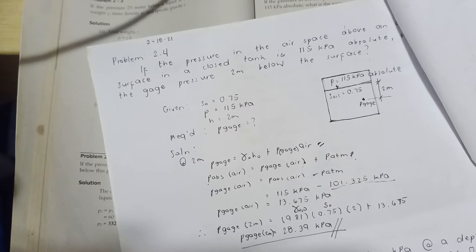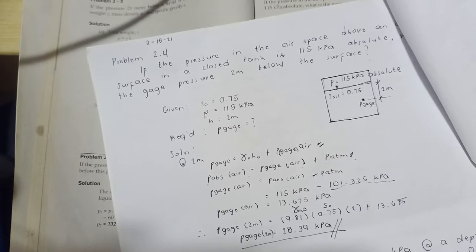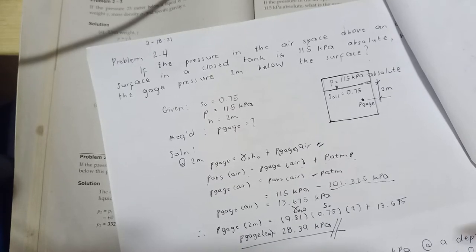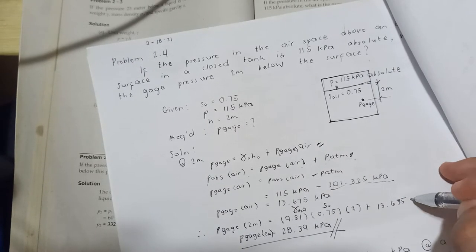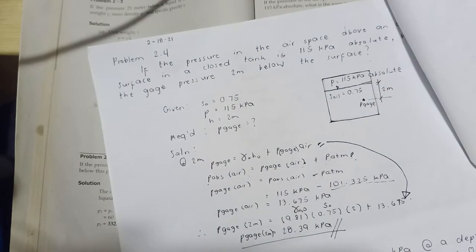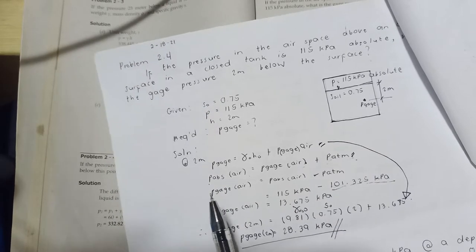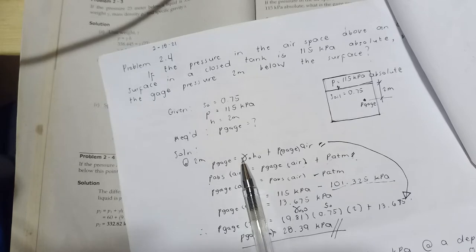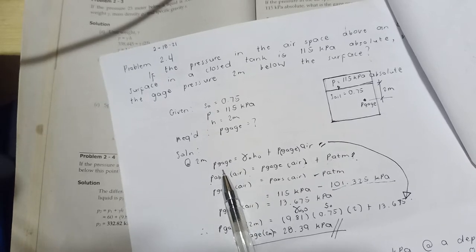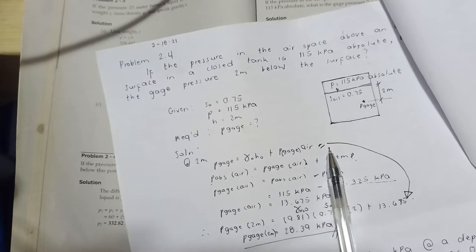The gauge pressure of the air is 13.675 kilopascal. Since we need the gauge pressure 2 meters below the free liquid surface of the oil, we use the pressure equation again combining both the oil column and air pressure.